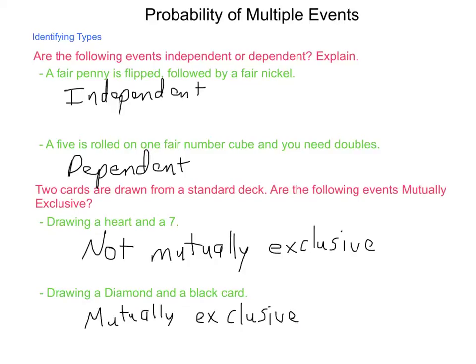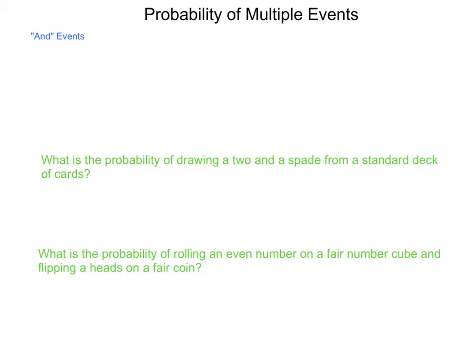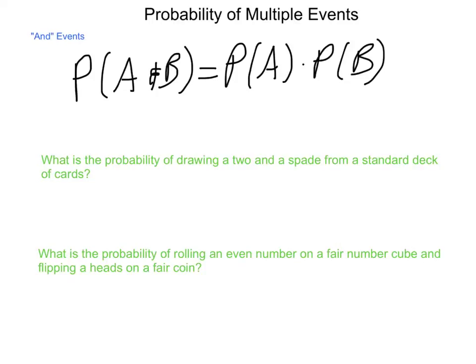Now, once we start looking at multiple events happening, we have two different types, and they normally fall under needing these different items that we talked about: independent, dependent, and mutually exclusive or not. The first are AND events probabilities. So AND events is when we need multiple things to happen at the same time. And when we need these multiple things to happen at the same time, the probability of their outcome, if the events are independent, is found by saying the probability of A and B is equal to the probability of A times the probability of B. So with independent events, if each one can happen on its own, the probability of both happening at the same time is the likelihood of each one individually.